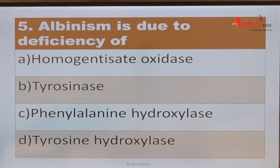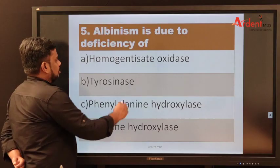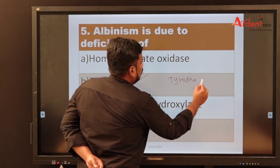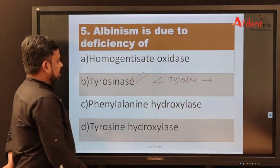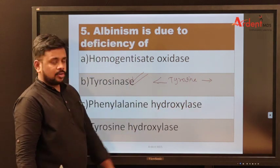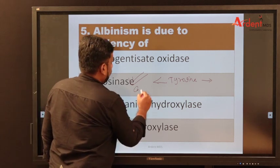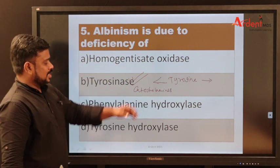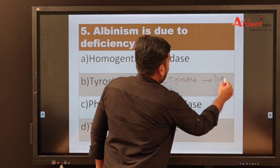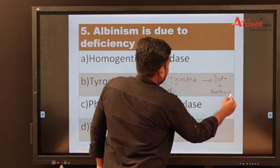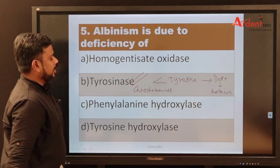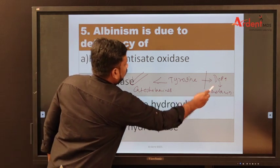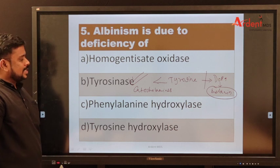Albinism is due to deficiency of tyrosinase. Tyrosine goes through two pathways: with tyrosine hydroxylase it helps form catecholamines; with tyrosinase it produces DOPA and then melanin. A defect in tyrosinase leads to defective synthesis of melanin — this is albinism.